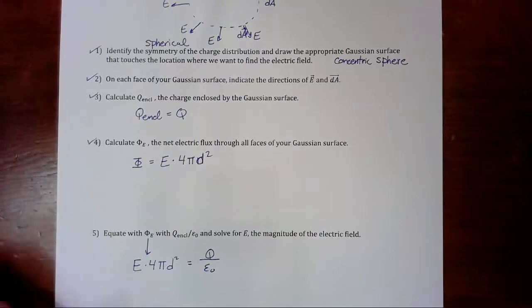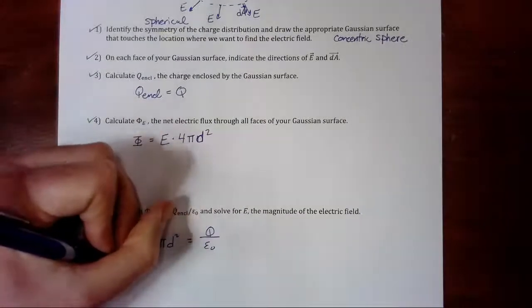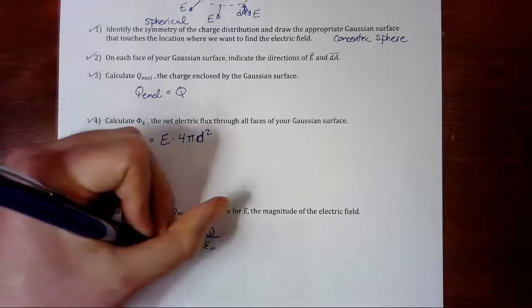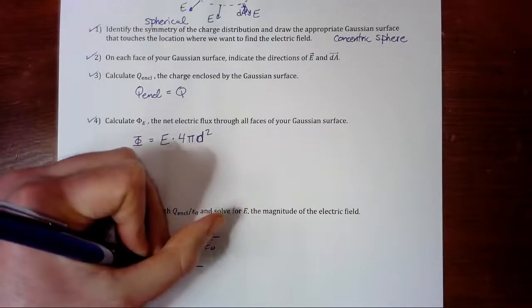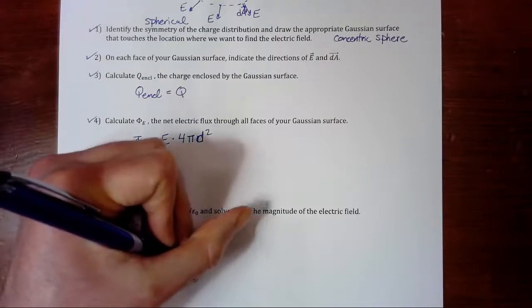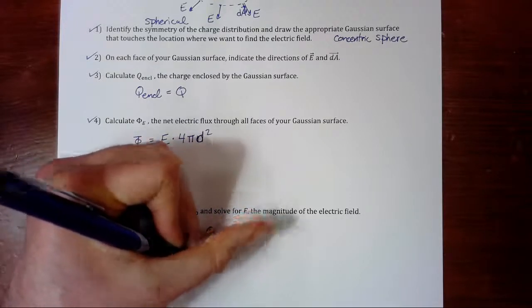Now, we just have to rearrange and solve for E. Nothing cancels out. Left with q divided by 4π epsilon naught times d squared.